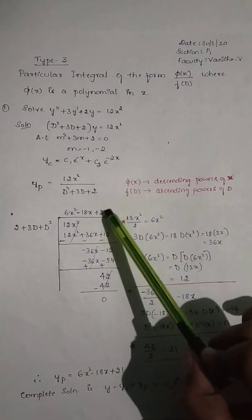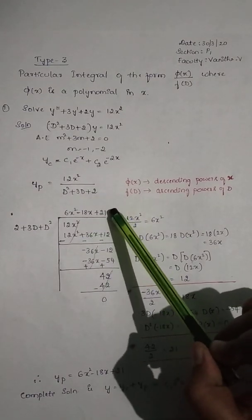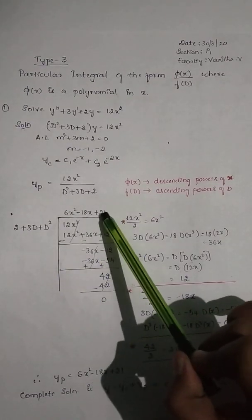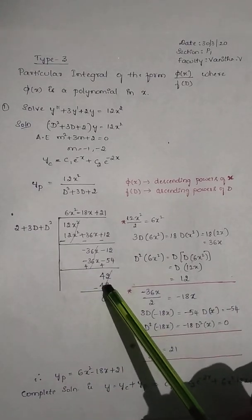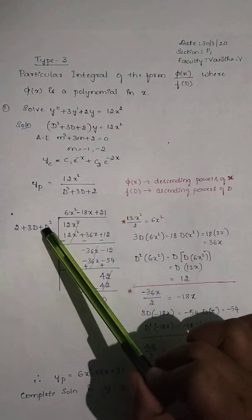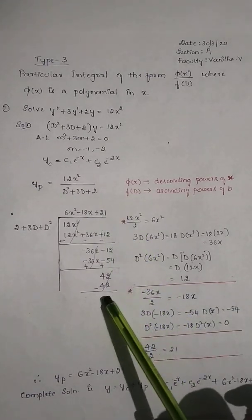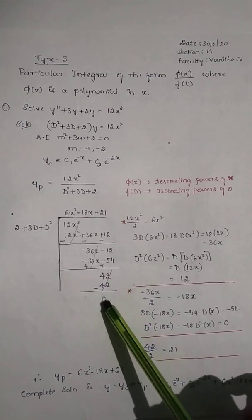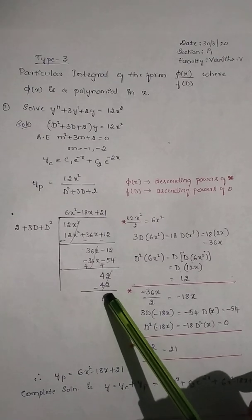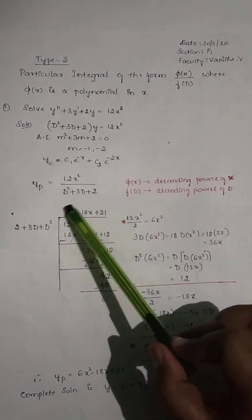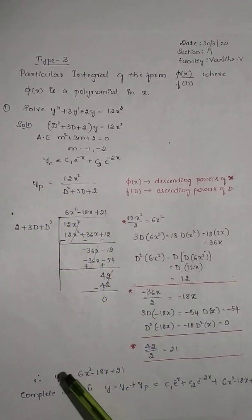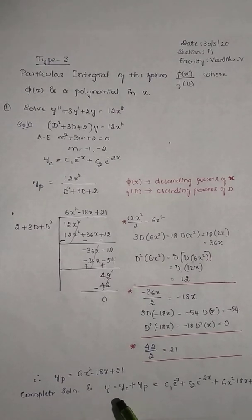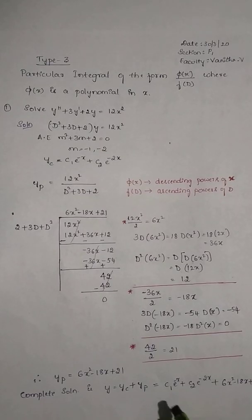In the third step, 42 ÷ 2 = 21 — write 21 in the quotient next to −18x. Multiply 21 by all terms of f(D): 21 × 2 = 42, and differentiation of a constant is 0, so you get only 42. Change the sign, cancel 42, and the remainder is 0. The quotient gives yp = 6x² − 18x + 21. To write the complete solution, substitute yc and yp into y = yc + yp.